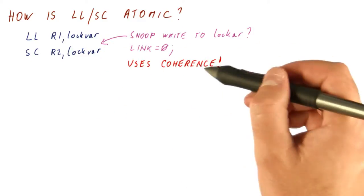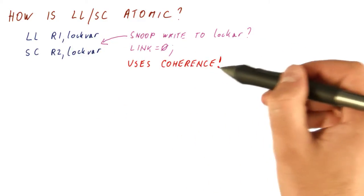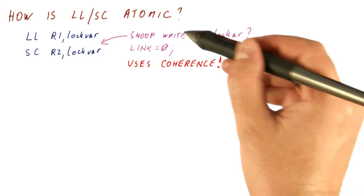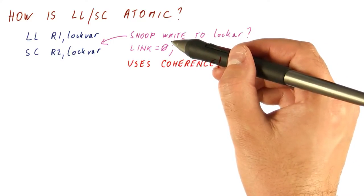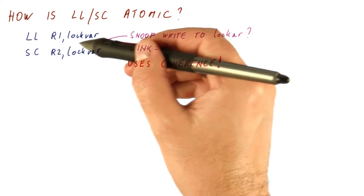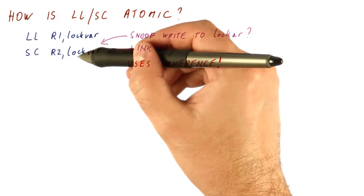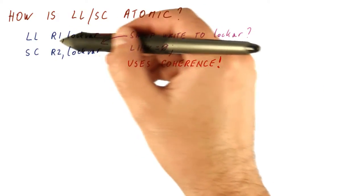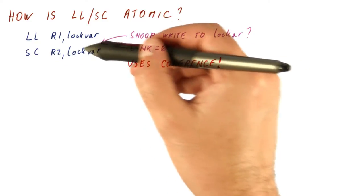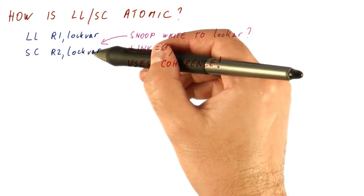So the load link store conditional really are relying on the coherence where we observe writes by others to make sure that if the store conditional succeeds, it can guarantee that nobody else grabbed the lock between when we check the lock and when we think we grabbed it by writing a busy value into it.